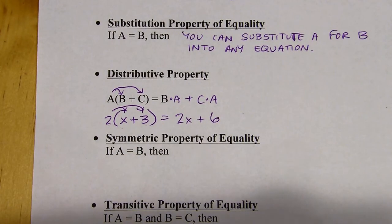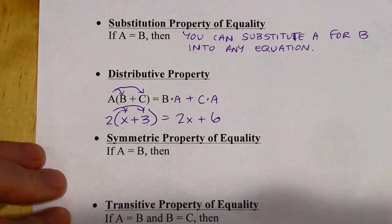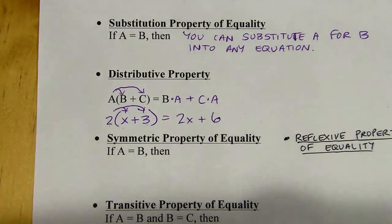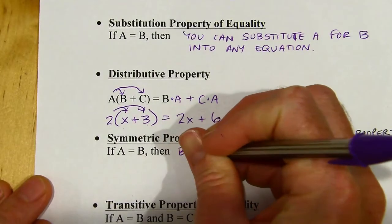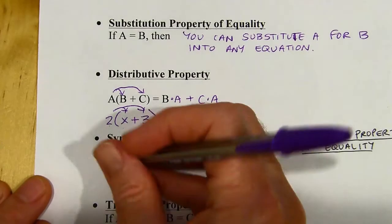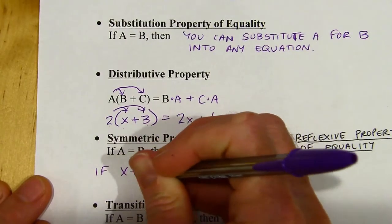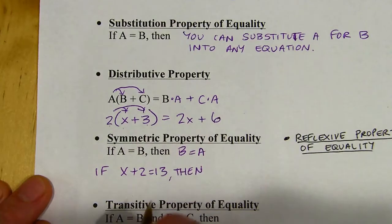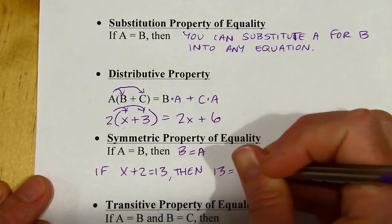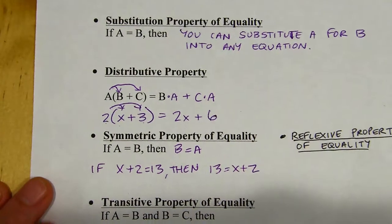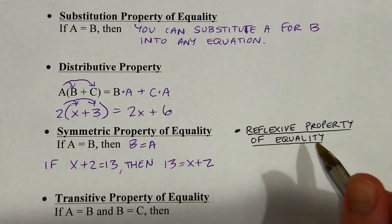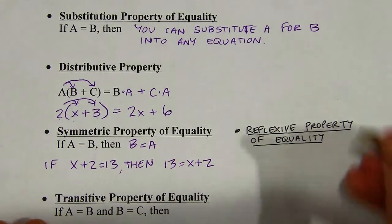Then we've got the symmetric property of equality. The symmetric property says that if A equals B, then B equals A. So that means I can take an equation — if X plus two equals 13, I can take that equation and flip it around over the equal sign, so then 13 is going to equal X plus two. That's the symmetric property of equality. What I had forgotten on my sheet is the reflexive property of equality, and this says that anything equals itself.